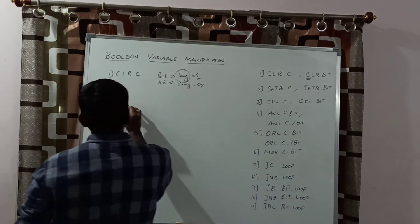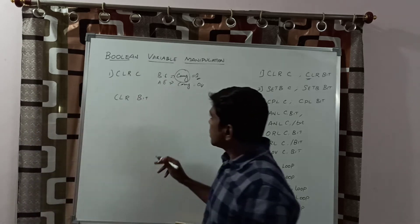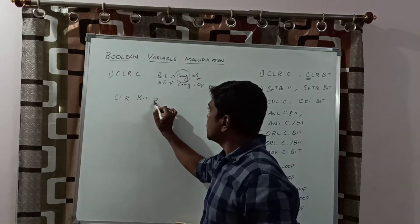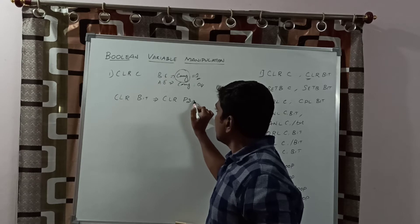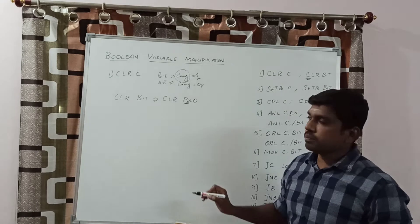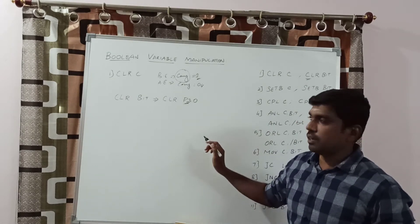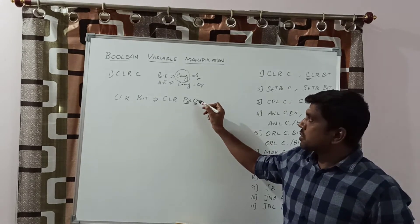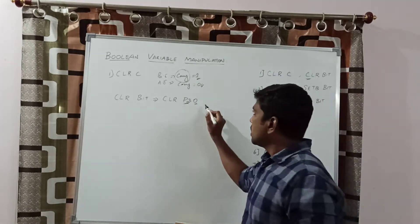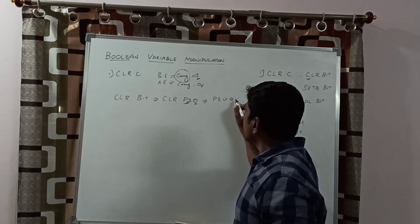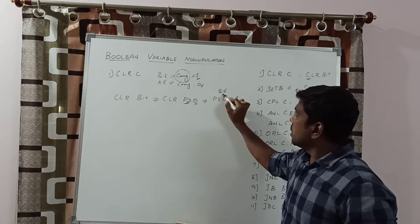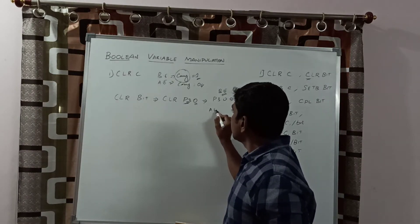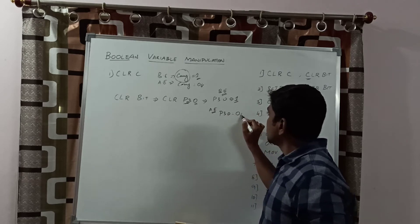The second instruction is CLR bit. Unlike CLR C which operates on the carry bit, this instruction specifies a particular bit. For example, CLR P3.0 considers port 3's 0th bit. Each port has 8-bit values. Before execution, P3.0 value is 1. After execution of this instruction, the bit is cleared. After execution, P3.0 equals 0.